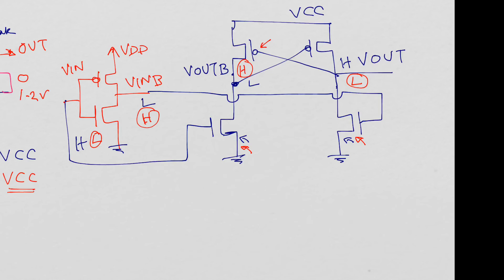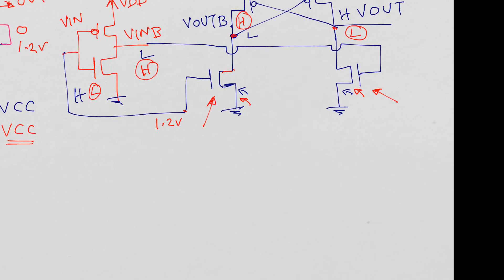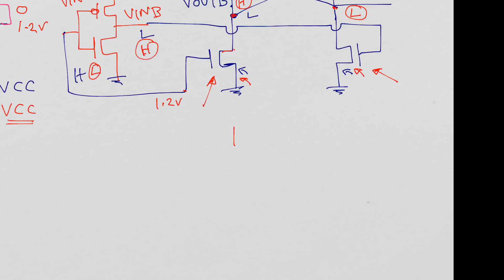One thing to take into consideration is that the two N-channel devices need to have a lower VT to turn on with 1.2 volts applied. With 1.2 volts applied they should be able to turn on hard and pull the respective node to ground. If this is not possible for some reason with the high voltage devices, there is a way to use low voltage devices in the cross-coupled latch instead.